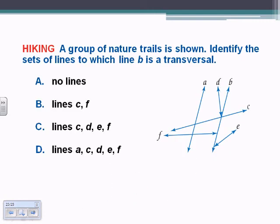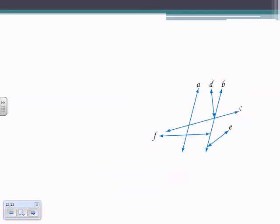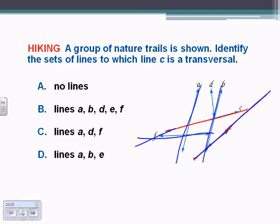Same type of question: line B as a transversal. Very similar to the last question — we have four lines intersecting it, so the answer is C. For C as the transversal, all of the lines would intersect C: B, A, D, E, and F — answer B.